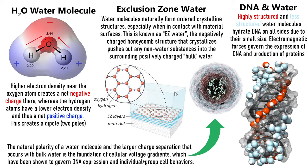There are experiments showing that water can absorb and radiate information. The natural polarity of a water molecule and the larger charge separation that occurs with bulk water is the foundation of cellular voltage gradients, which have been shown to govern DNA expression in individual and group cell behaviors.